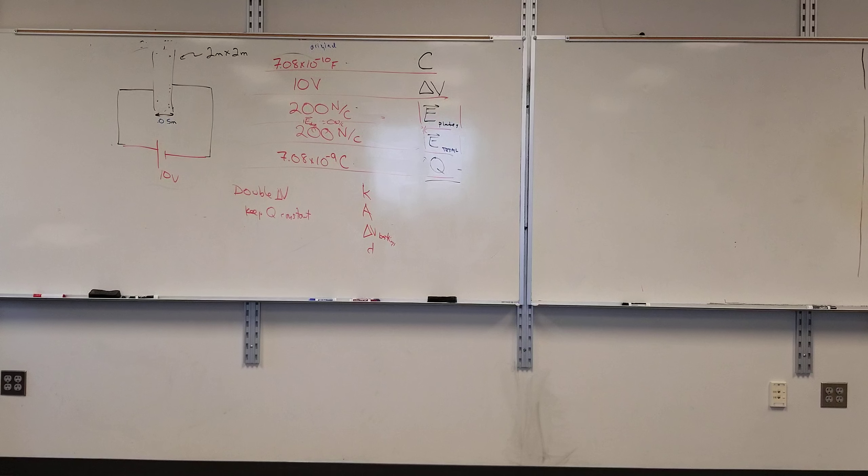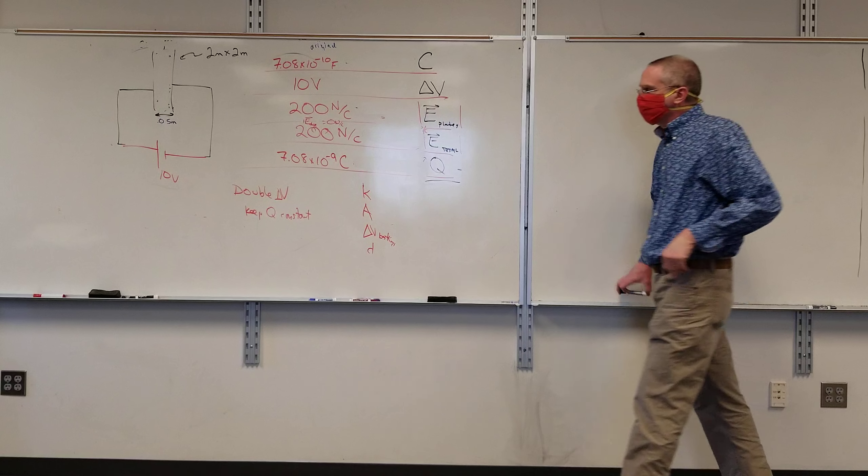Alright, so we want to double voltage. If I just crank up the battery to 20 volts, that's not really going to help because we're definitely going to be doubling the charge stored on the plates. We're keeping Q constant. I want Q to stay constant and I want to double the voltage. Would you have to increase the distance? Yeah, I was thinking the distance would need to change. Walk me through that.